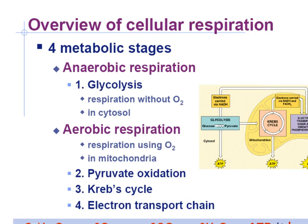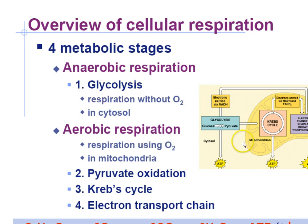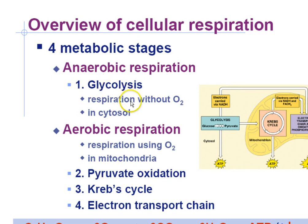We have a couple of processes going on here. Remember that anaerobic means without oxygen — 'an' means without, 'aerobic' means oxygen. Only one process does not require oxygen: whether it's there or not, you're going to be able to do glycolysis. If you don't have a mitochondria — if you're a bacteria — then that's all you're going to be able to do is glycolysis. This happens in the cytosol, the cytoplasm, outside the mitochondria. If you're a bacteria, that's all you have is a cytoplasm; you don't have membrane-bound organelles like mitochondria.